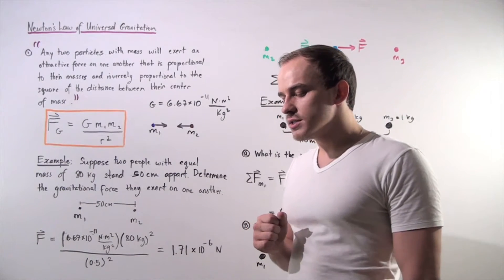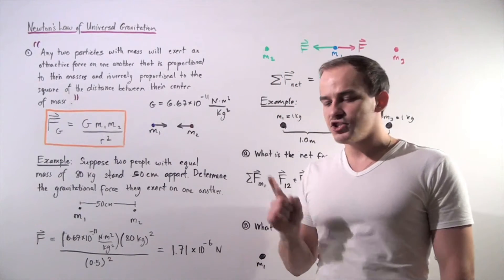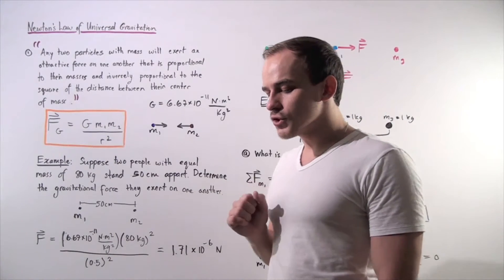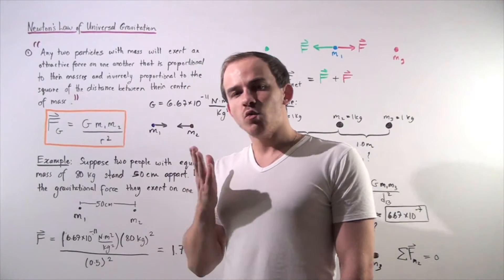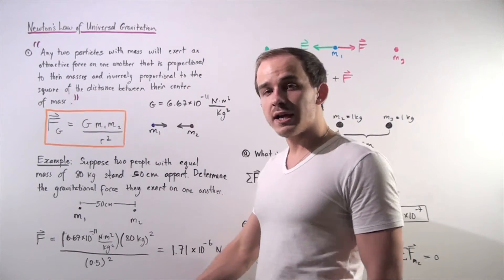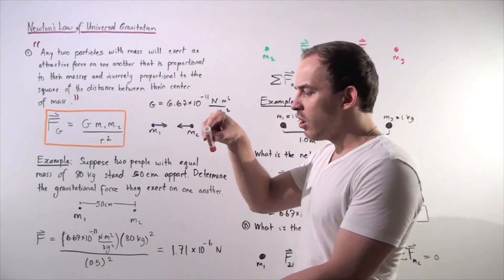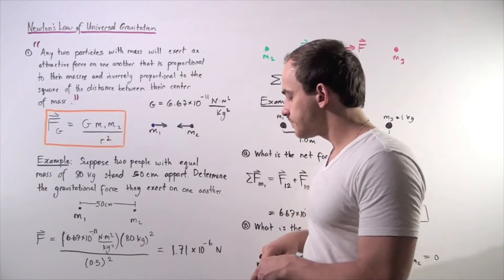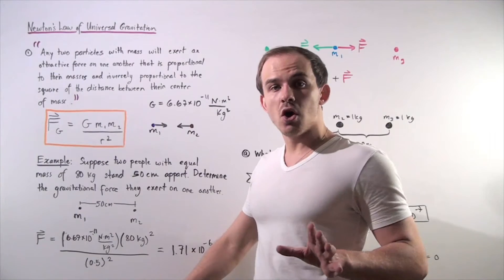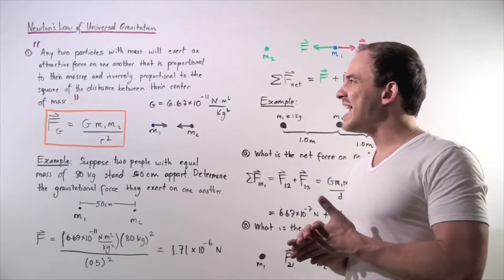One of the most important laws in classical physics is Newton's law of universal gravitation. This law describes things like why does an object fall when you release it. We can describe this law using the following statement.